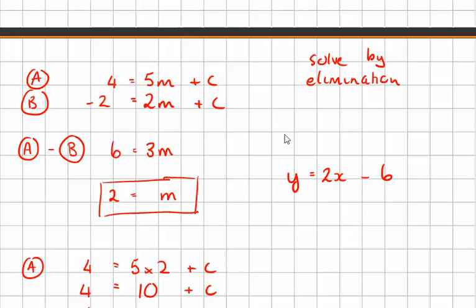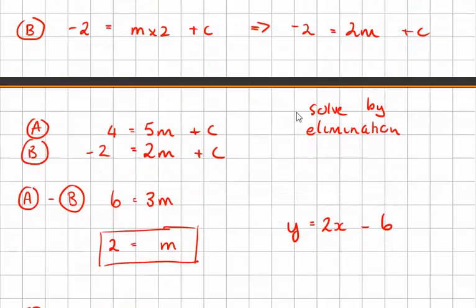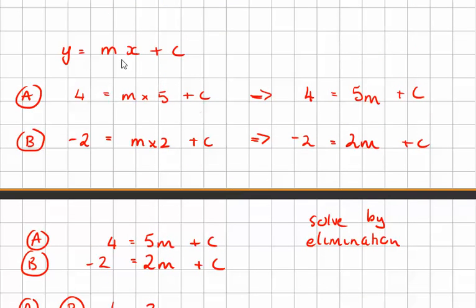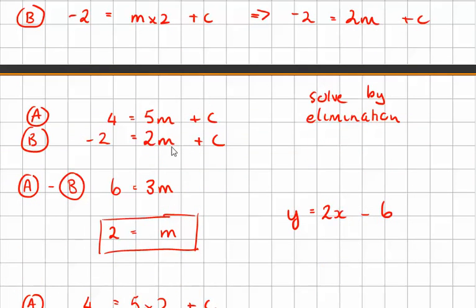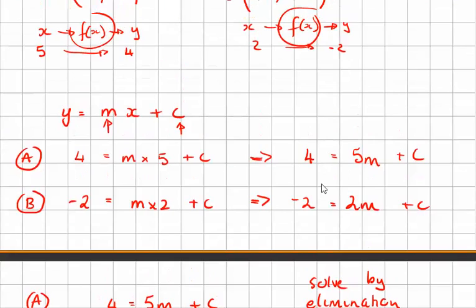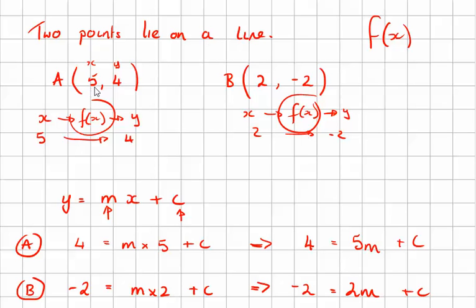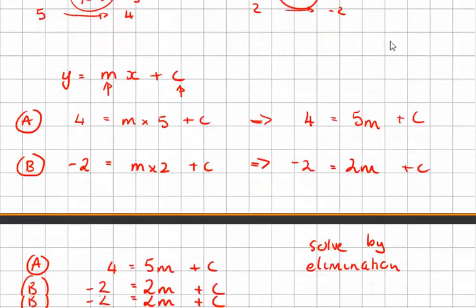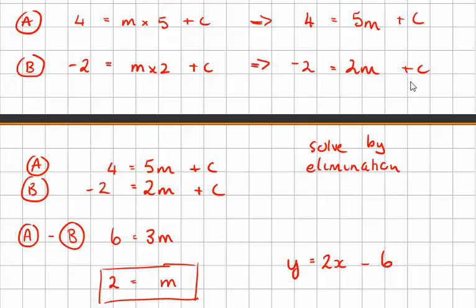Let's check, is it 2x minus 6? I've worked out that m is 2 and c is -6. If we check back at the coordinates, you should always check. 2 times 5 is 10, 10 minus 6 is 4, we're right there. 2 times 2 is 4, 4 minus 6 is -2, we're right there. So our equation that we ended up with is correct.